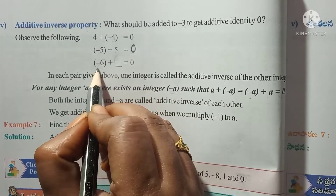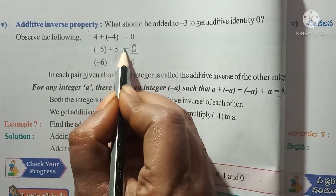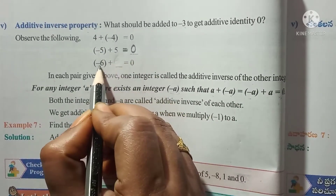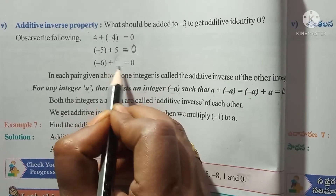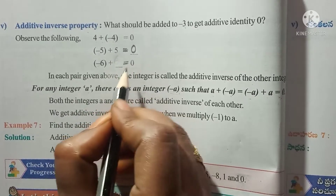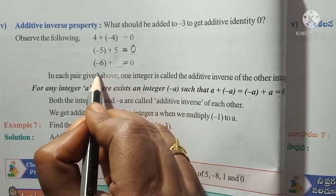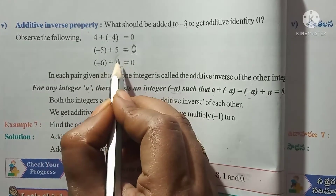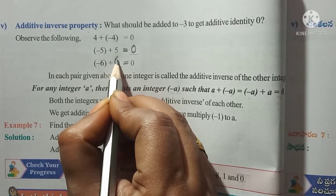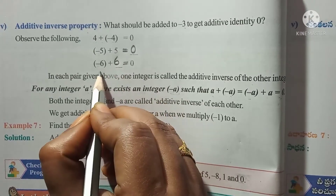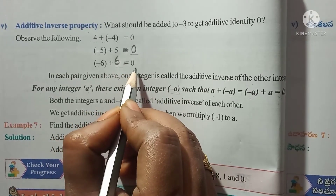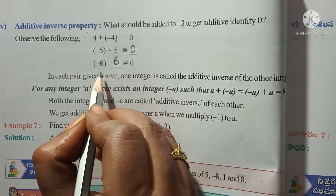Another example: minus 6 plus 6 equals 0. In each case, adding a positive and its corresponding negative gives 0.